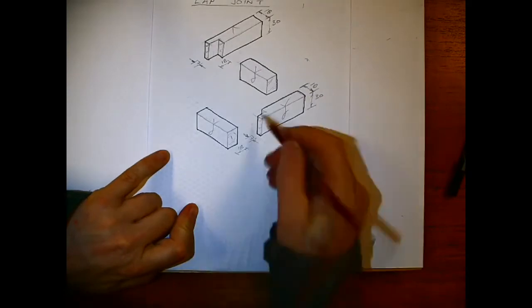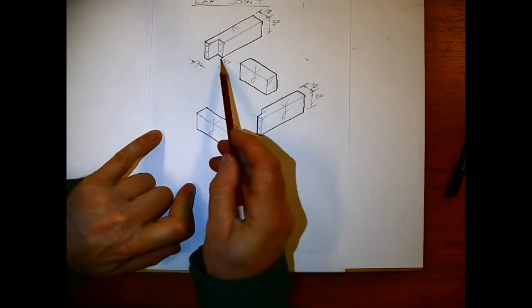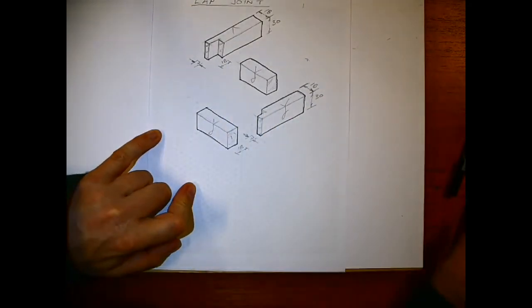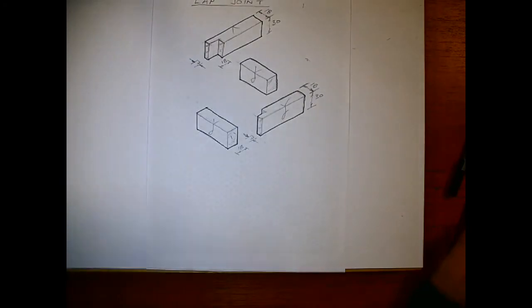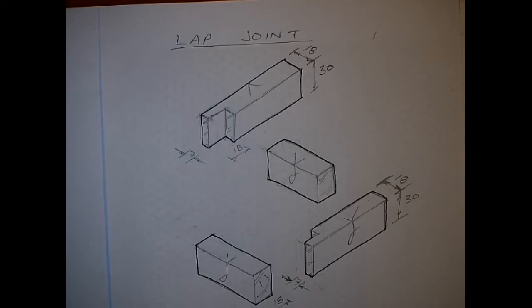That's our lap joint drawn here. A final picture then, a slightly closer view of what we want to end up with. You'll probably get away with just drawing the top section there.